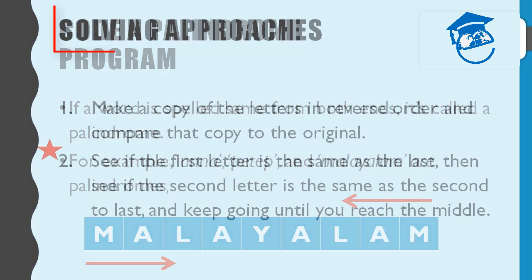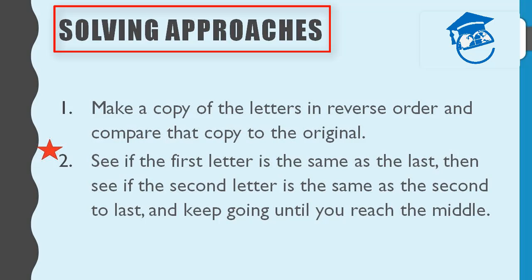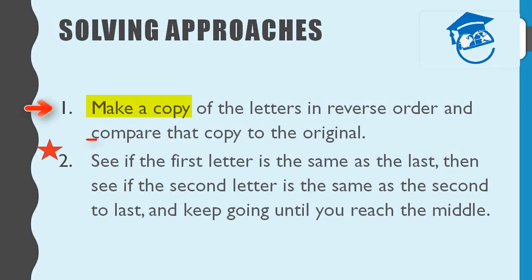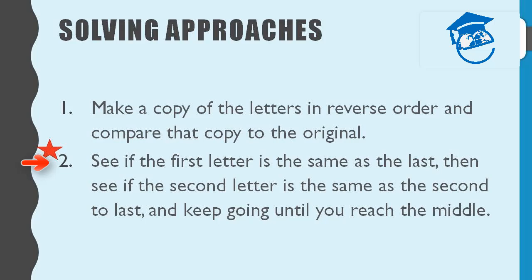These words are called palindromes. There are two basic ways of determining whether a word is a palindrome. Method one is to make a copy of the letters in reverse order and compare that copy to the original. The second approach is to see if the first letter is the same as the last, then see if the second letter is the same as the second to last.